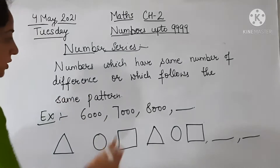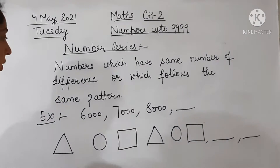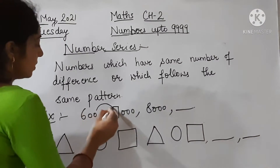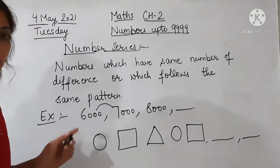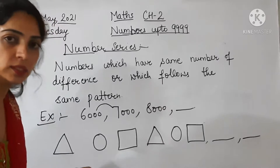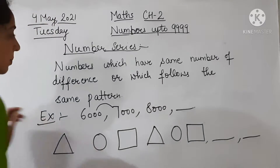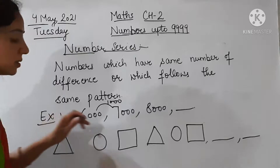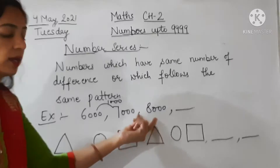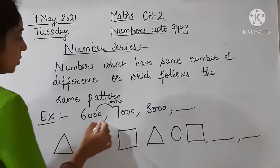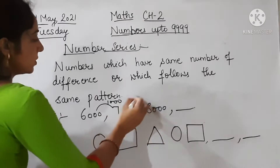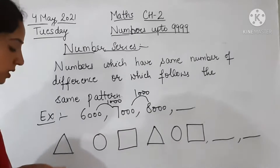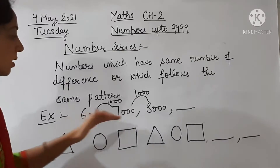So is ke andar dekhe ga — in this series we can see that har ek ke under one thousand skip ho raha hai. Theek hai? Here, one thousand is being skipped each time. When we move between any two numbers, the difference between them is one thousand.